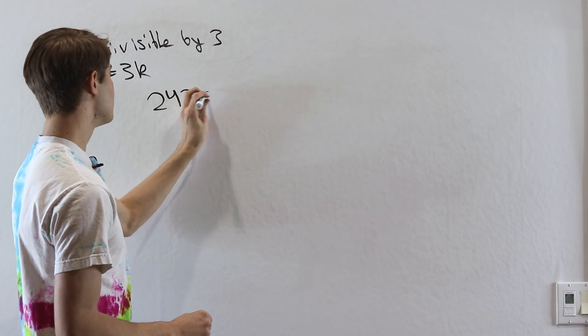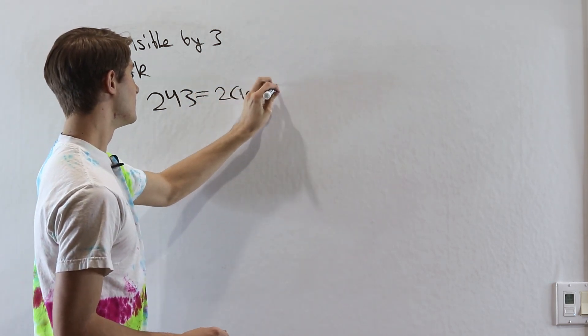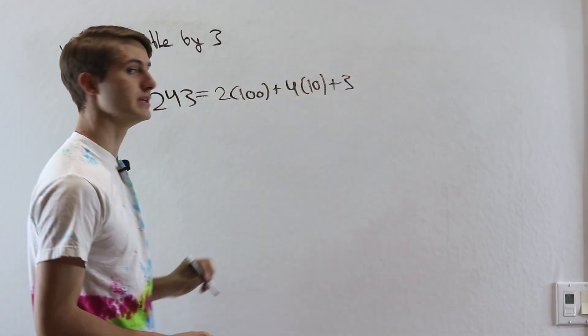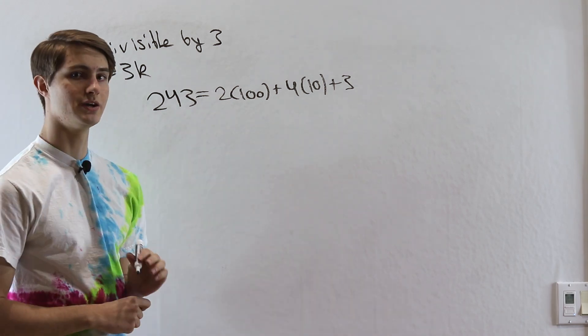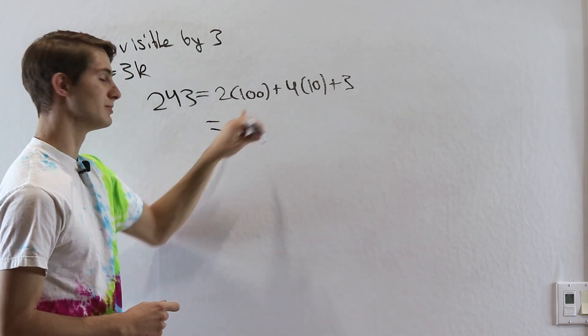So we can write 243 as being equal to 2 times 100 plus 4 times 10 plus 3. This is going to add up to the same result. And now this is where the cool part is.